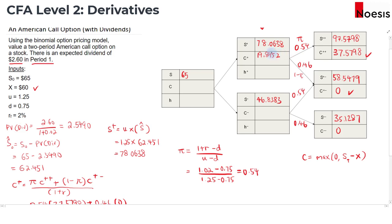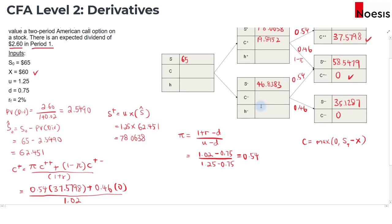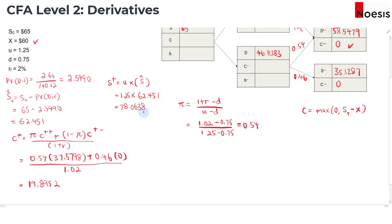For now, we're going to assume that we don't exercise early — we'll just hold it and value it all the way back to period 0, and later we'll see what happens if we do exercise early. For C-, it's straightforward because the payoff of the call option is 0 at both nodes. So 0.54 times 0 plus 0.46 times 0 divided by 1.02 gives us 0.